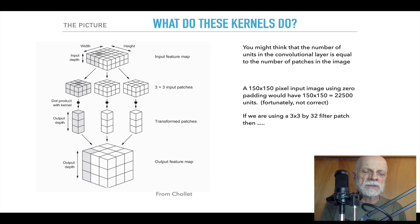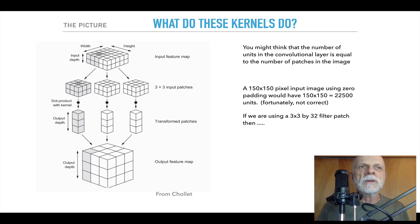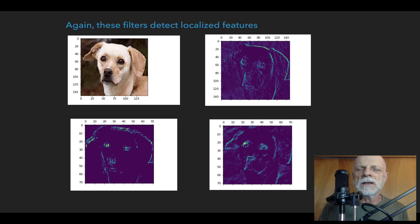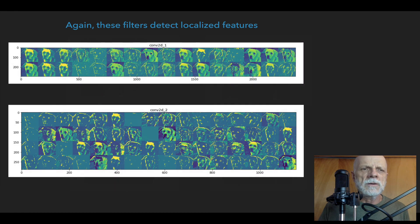What do these kernels do — especially what do these different channels do? These channels, at least at the initial layer, are determining the hyper-features of the picture. They're kind of filters — you're filtering the image and creating these different layers. You can see they do a pretty good job of edge detection. These are three of the 32 filters shown here, and some keep pretty much the entire image while others are good at edge detection.